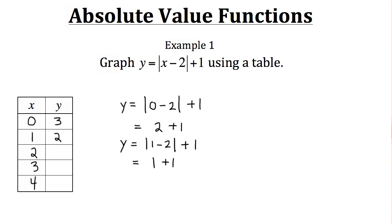Let's speed this up. When x is 2, we get 2 minus 2 which is 0; the absolute value of 0 is 0, leaving us with 0 plus 1, so y equals 1. When x is 3, we get 3 minus 2 equals 1; the absolute value of 1 is 1, plus 1 gives y equals 2. When x is 4, we get 4 minus 2 equals 2; the absolute value of 2 is 2, plus 1 gives y equals 3.